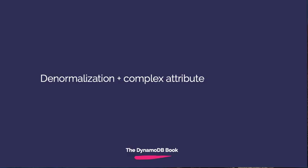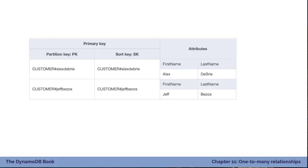The first strategy is denormalization with a complex attribute. Imagine an e-commerce store where customers can save different mailing addresses to their account. They can save multiple addresses, so we have a one-to-many relationship where a customer has multiple mailing addresses, and any individual address belongs to a single customer.